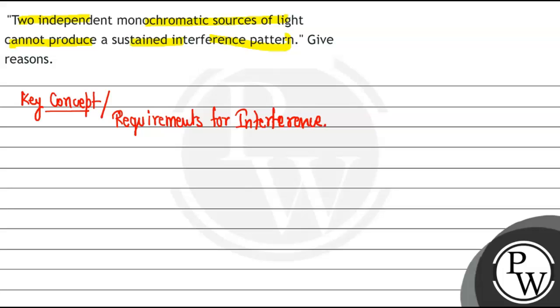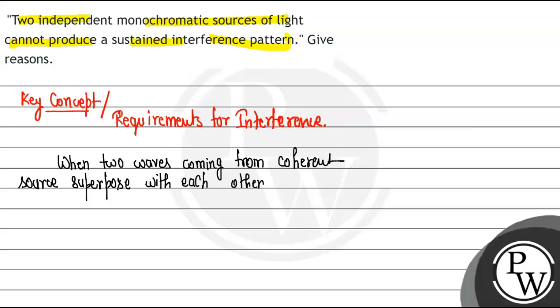So interference ka bota hai ki jab two waves kya kerti hai superpose kerti hai. So when two waves coming from coherent sources superpose with each other,